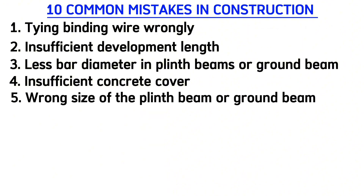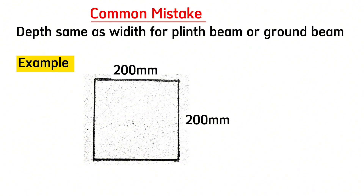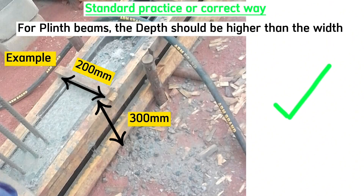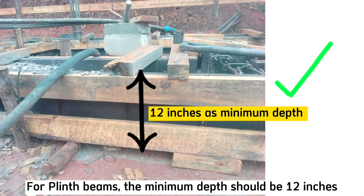Common mistake number five is the wrong size of the plinth beam. What most contractors do is that they simply make the depth and the width of the plinth beam the same, which is wrong. The correct version is that for plinth beams or ground beams, the depth should be higher than the width. Also remember that the minimum depth for plinth beams should be 12 inches.